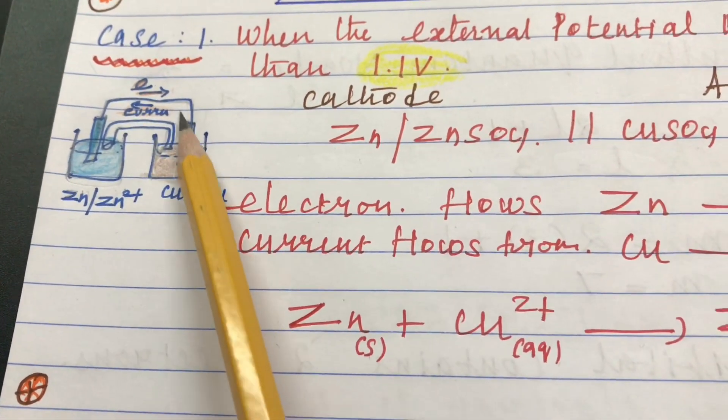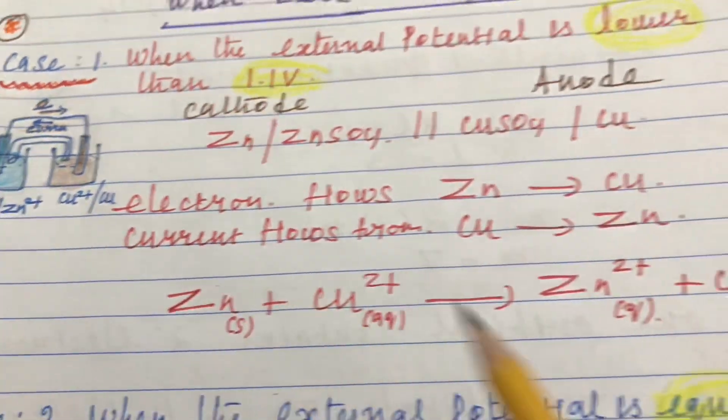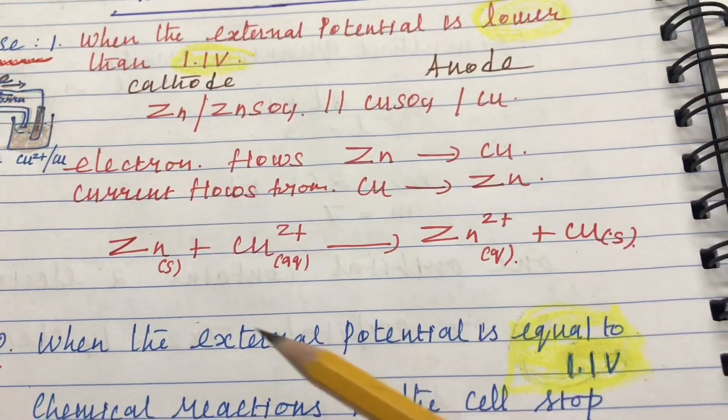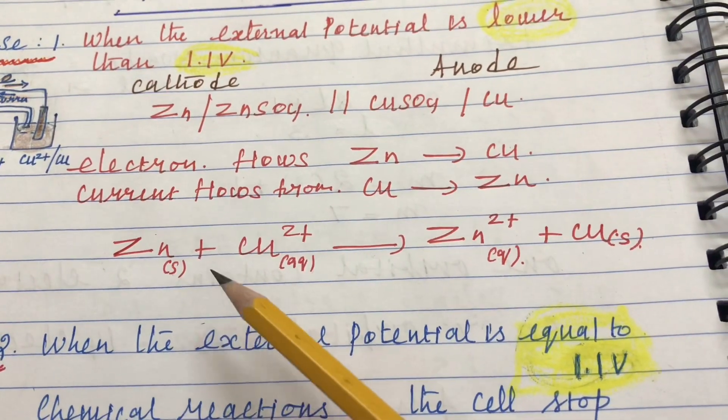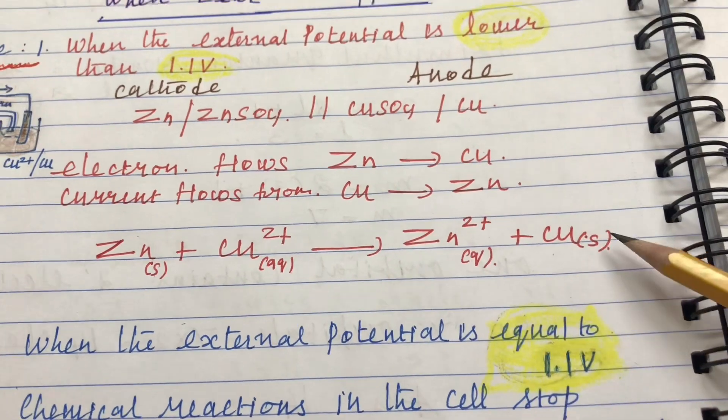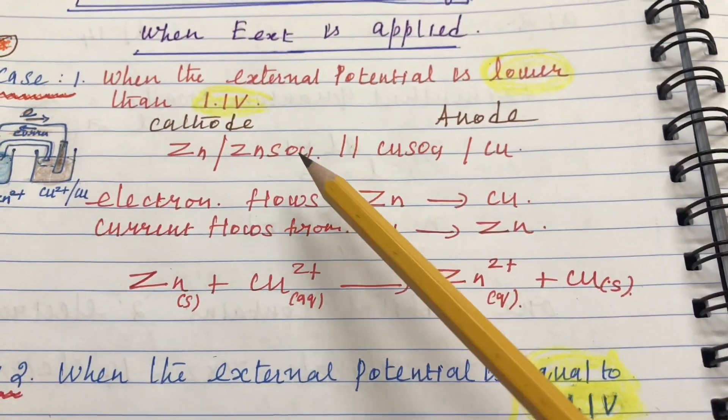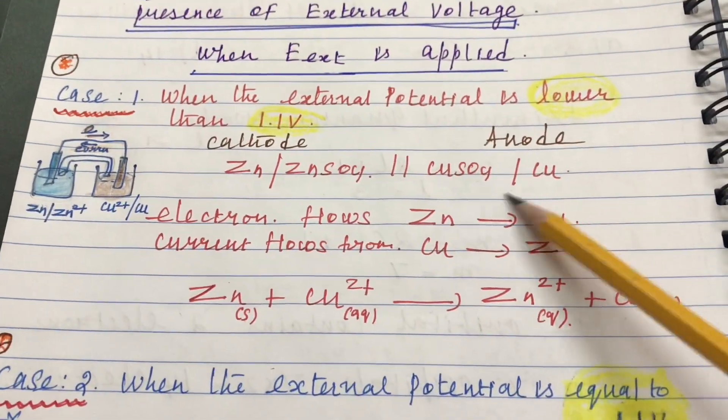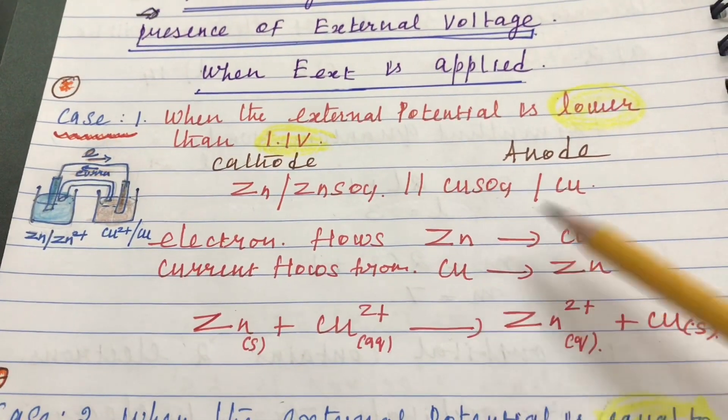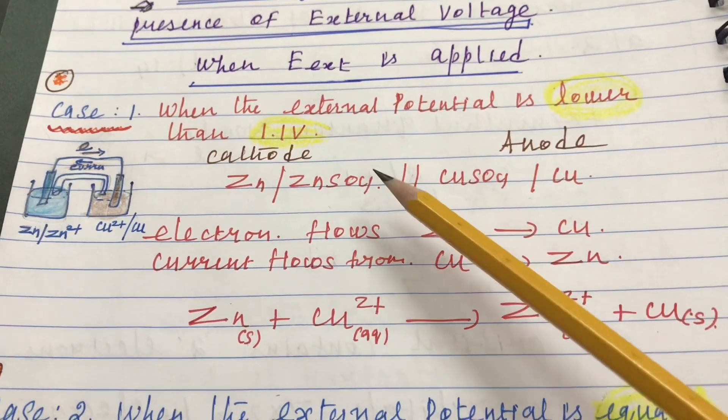The corresponding redox reaction will be zinc plus copper 2+ gives zinc 2+ and copper. So, oxidation half cell and reduction half cell, the flow of electric current because of the redox reaction when lower than 1.1 volt.